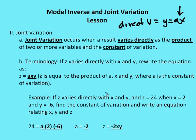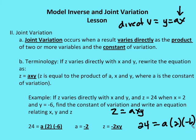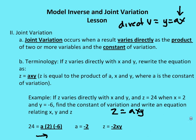Let's take an example. Z varies jointly with x and y, and z is equal to 24 when x is 2 and y is negative 6. Find the constant of variation and write an equation relating x, y, and z. The first thing we need to do is find the value of a. So we have 24 is equal to a times 2 times negative 6, which gives us 24 is equal to a times negative 12. So a is equal to negative 2. Once I have the a value, I substitute it back in, and I have my joint variation equation: z is equal to negative 2xy. The equation 24 equals a times 2 times negative 6 is just our means to get to the a value of negative 2.